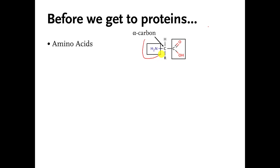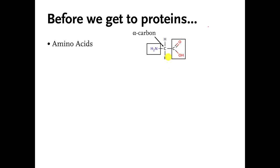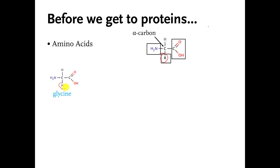All of the amino acid molecules that I am going to show you have this common part. They all have whatever goes in place of R different from each other. The simplest replacement for R is a hydrogen atom, because that's the simplest atom that we have. This particular amino acid molecule has a name — it's called glycine. I do not expect you to memorize what glycine looks like; I'm just telling you it's got a name, and this is what's taking the place of R.